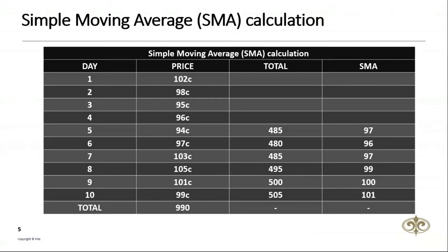Here's an example: the closing prices of share ABC over a 10-day period, and we're going to calculate a five-day moving average. We add up the past five days — my total is 485. I divide 485 by five, which gives an SMA of 97. The reason we call it a 'moving' average is that as new values become available, the oldest data point must be dropped and a new one added. So to calculate the next point, I drop the 102 and add up the next five days, which comes to 480 divided by five — my average will be 96.